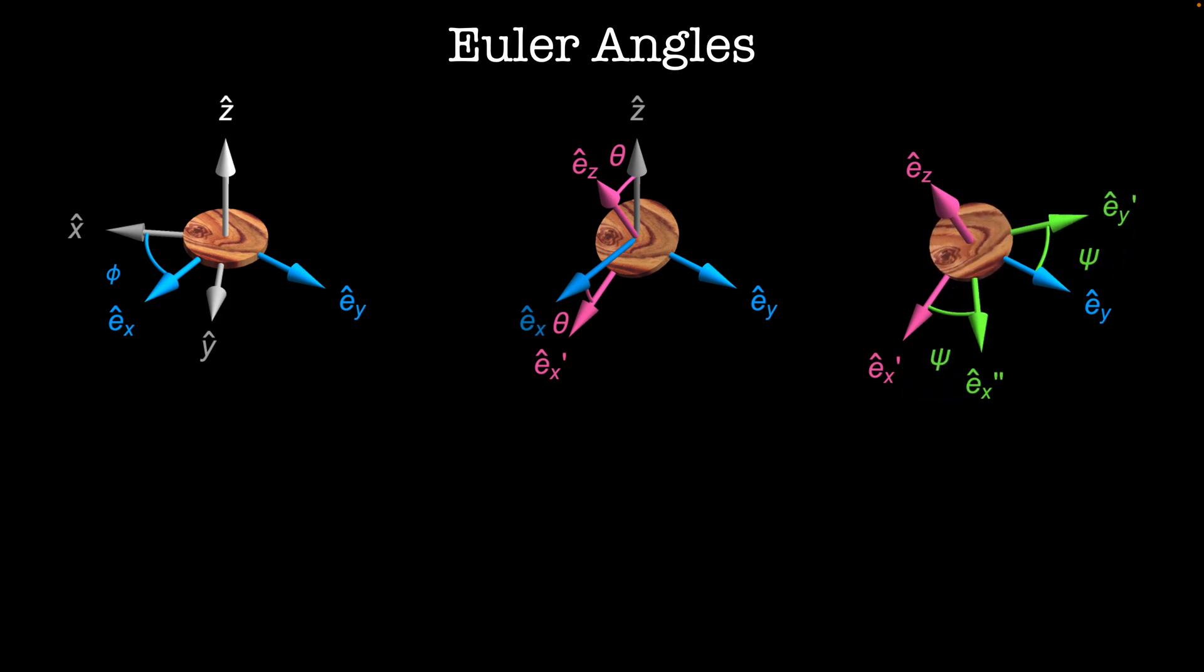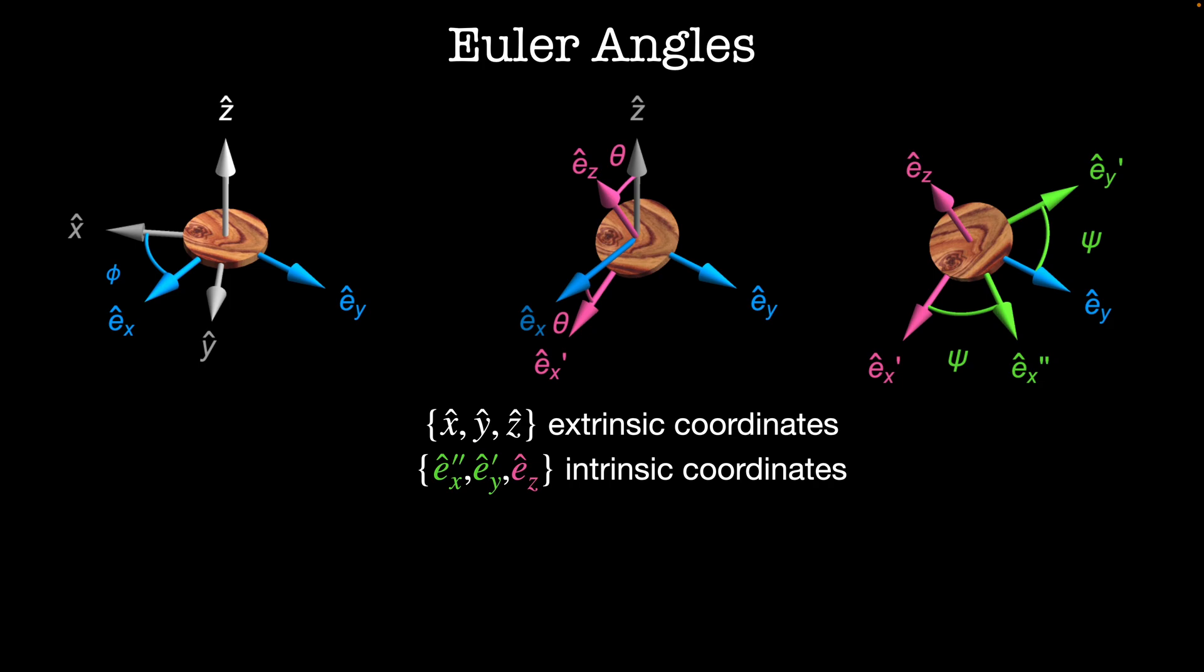This gives us new coordinates EX' and EY' in the body frame. We started off with X-hat, Y-hat, and Z-hat extrinsic coordinates and transformed them into new coordinates EX', EY', and EZ which are now anchored to the rotating body.